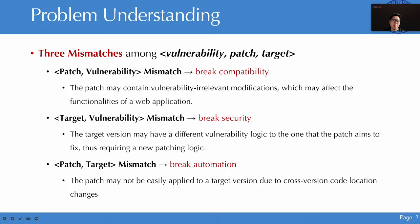First, the patch and vulnerability mismatch may break compatibility, since the patch may contain vulnerability-irrelevant modifications to update web application functionalities, which may be incompatible with old versions. Second, the target version and vulnerability mismatch may break security, as the official patch is usually developed for the pre-patched version, and the target version may not contain exactly the same vulnerability. Third, the patch and target version mismatch may hinder automated patch deployment, as code changes in the target version may make it difficult for patches to identify modified locations.